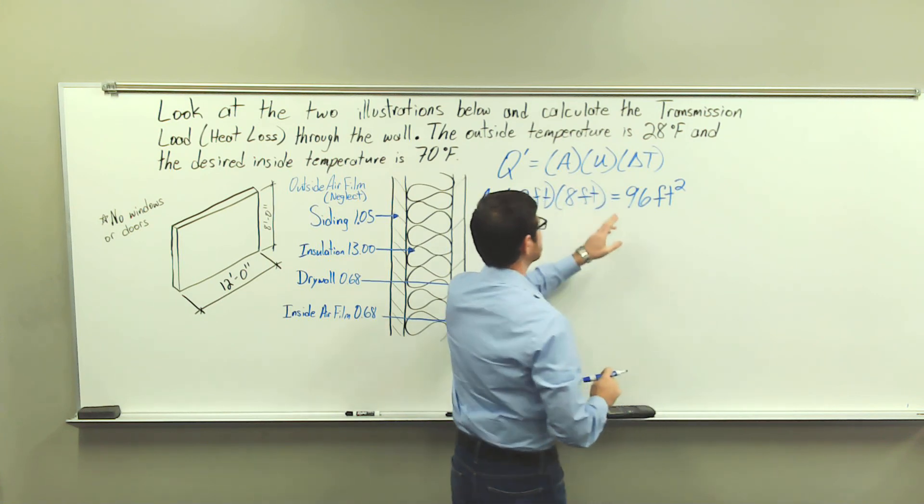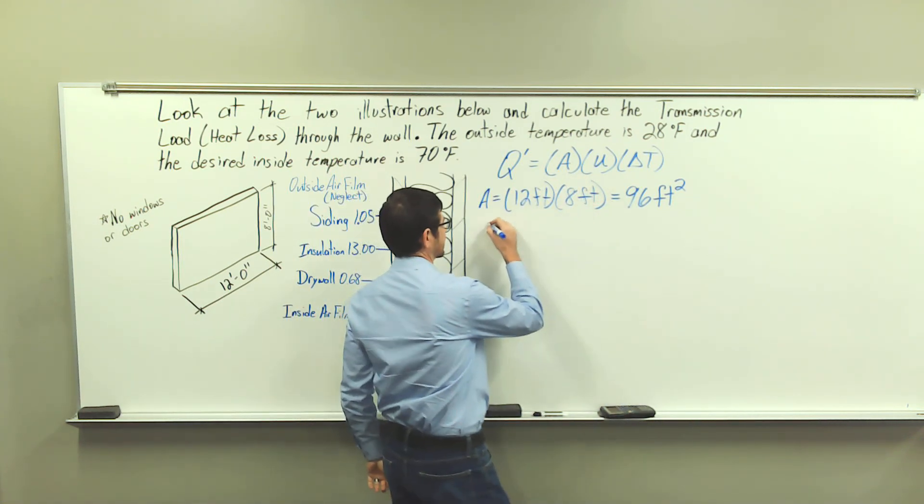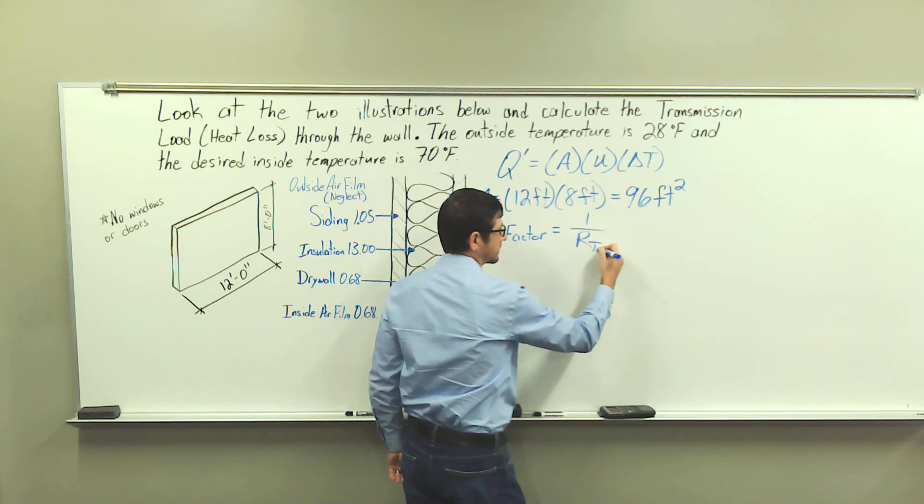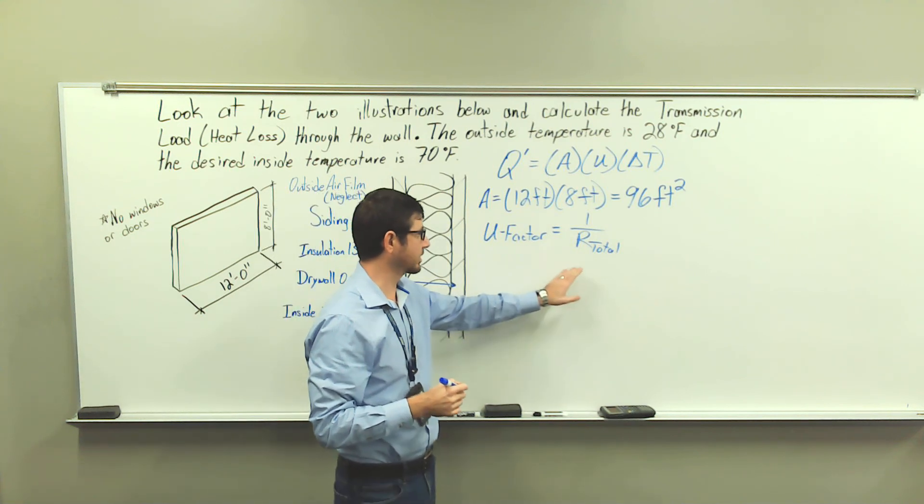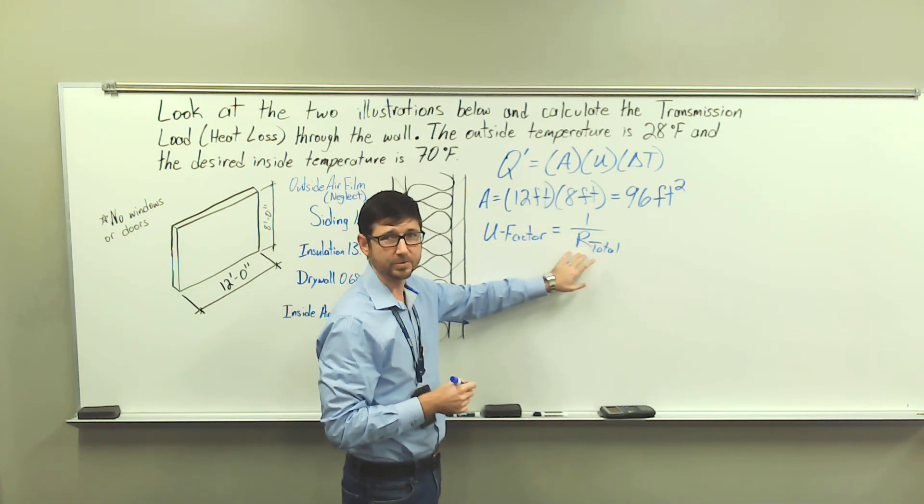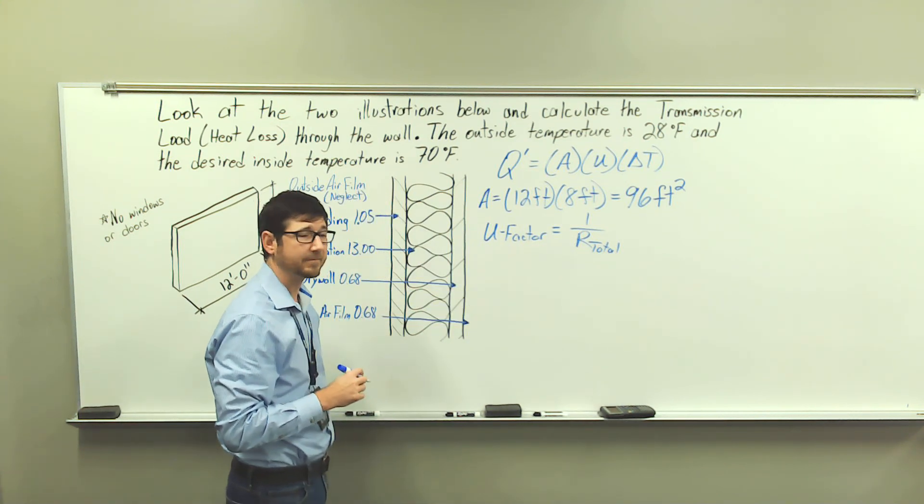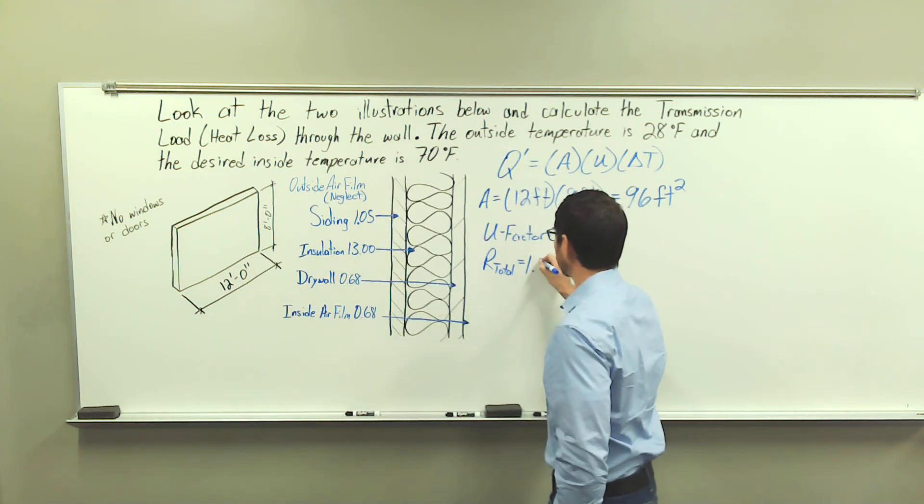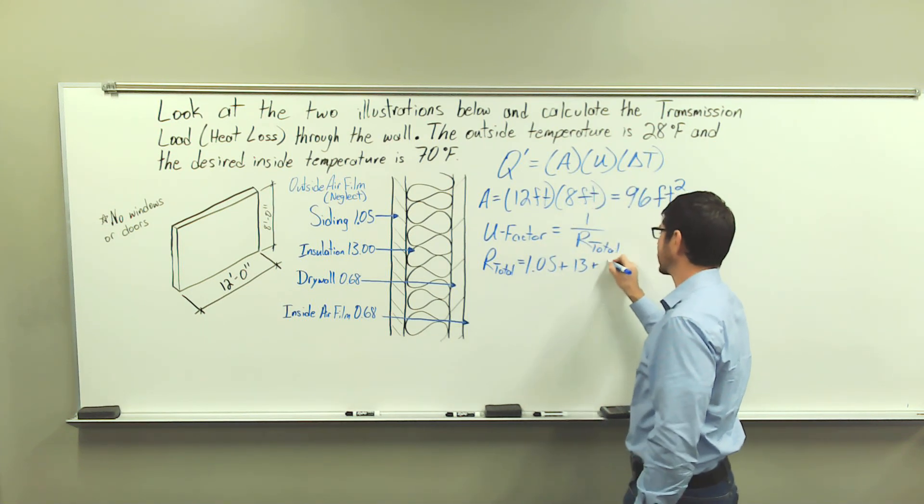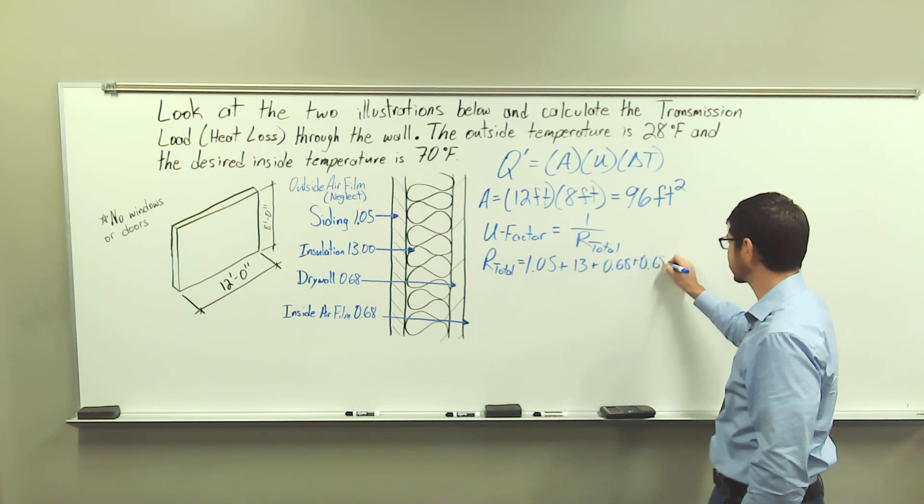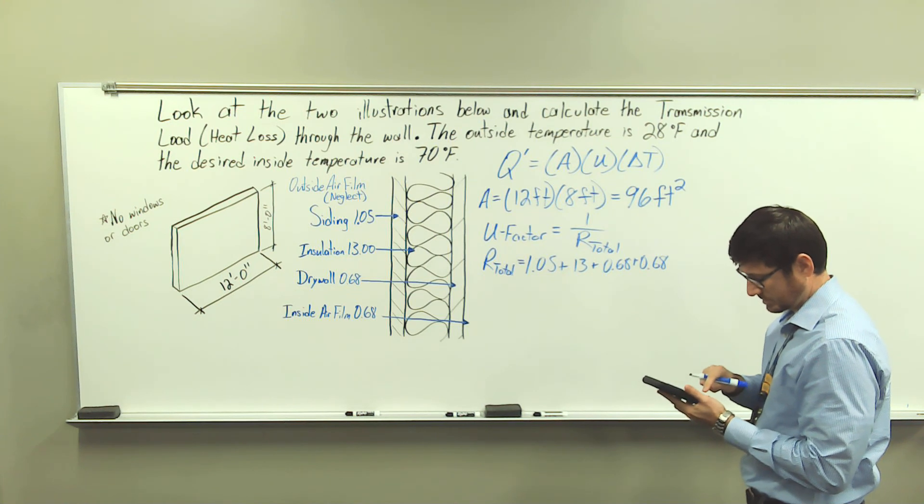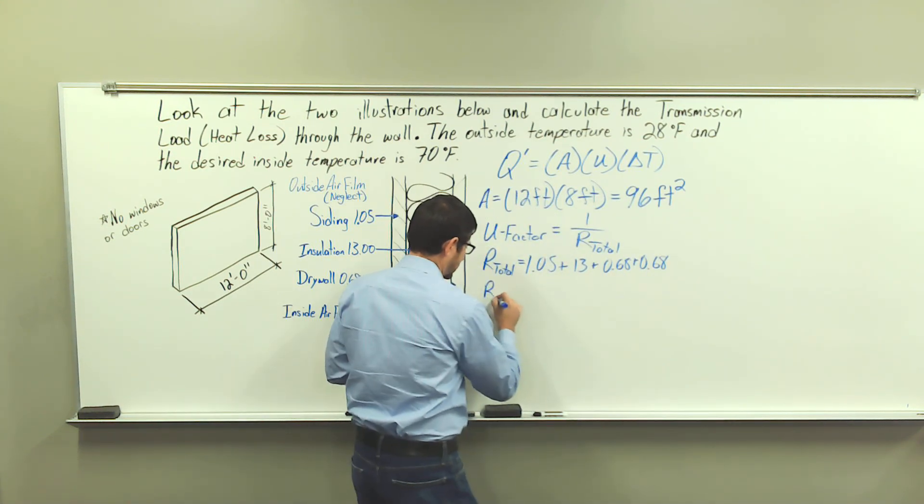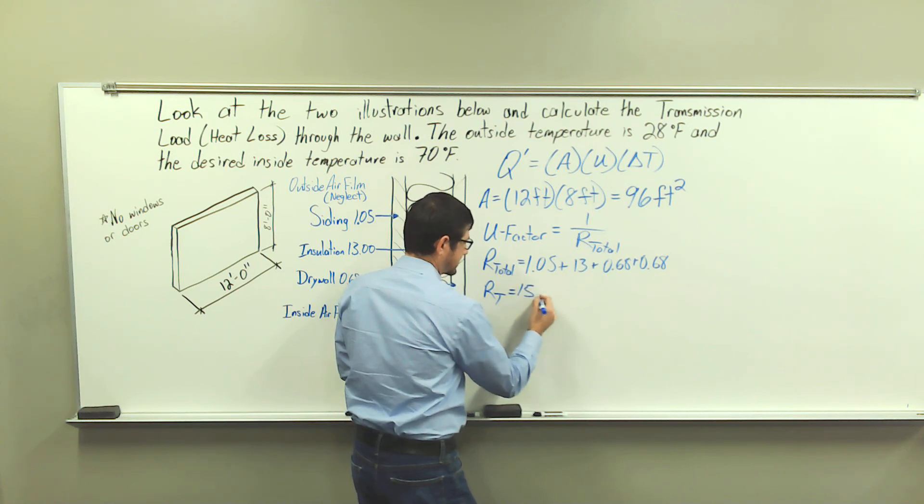And then to get our U factor, what we're going to have to do, U factor is equal to 1 divided by our total R value. So let's first calculate the total R value, and then we will do 1 divided by that value. So we have R subtotal is going to equal 1.05 plus 13 plus 0.68 plus 0.68. And I get 15.41.